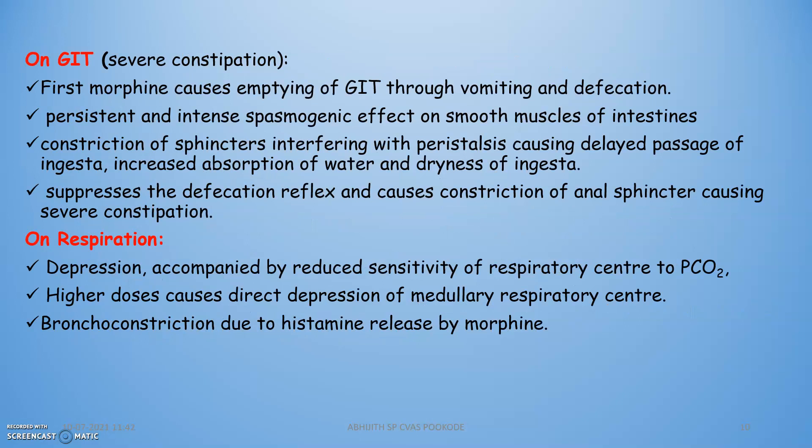On the GIT, morphine causes severe constipation. Initially, morphine causes emptying of the GIT through vomiting. Subsequently, persistent and intense spasmogenic effects on smooth muscles of the intestine cause constipation — water is absorbed, leaving very dry content. Suppression of the defecation reflex and constriction of the anal sphincter result in severe constipation.